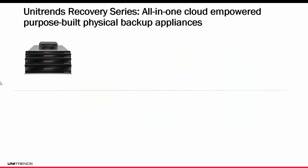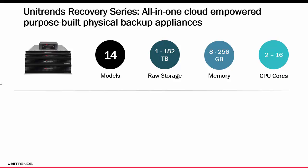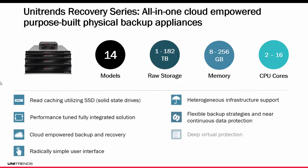Let's dive into the Unitrends Recovery Series appliance. It's an all-in-one, cloud-empowered, purpose-built, physical backup appliance. Unitrends has an array of 14 models ranging from 1 to 182 terabytes of raw storage, with an array of processing power and memory to handle certain suggested backup sizes. Check out the appliance data sheet on our website for more information on suggested backup sizes. Each appliance model that contains an S is able to do read caching utilizing SSDs. The appliance is a performance-tuned, fully integrated solution.